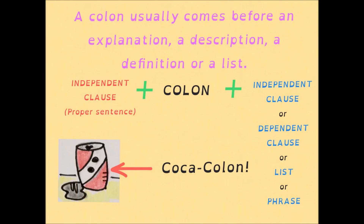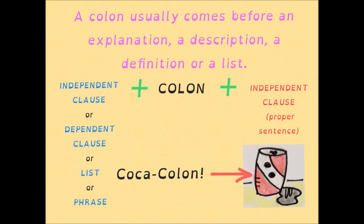That prince of punctuation marks — in simple terms, a colon normally comes before an explanation, description, definition, or list. I've channeled my inner maths teacher here to give you a rough formula for using colons. One side of the colon — normally the first side — you need a proper sentence or independent clause, that's the bit in red. On the other side of the colon you've got choices: you can put another full sentence, a dependent clause, a phrase, or a list.